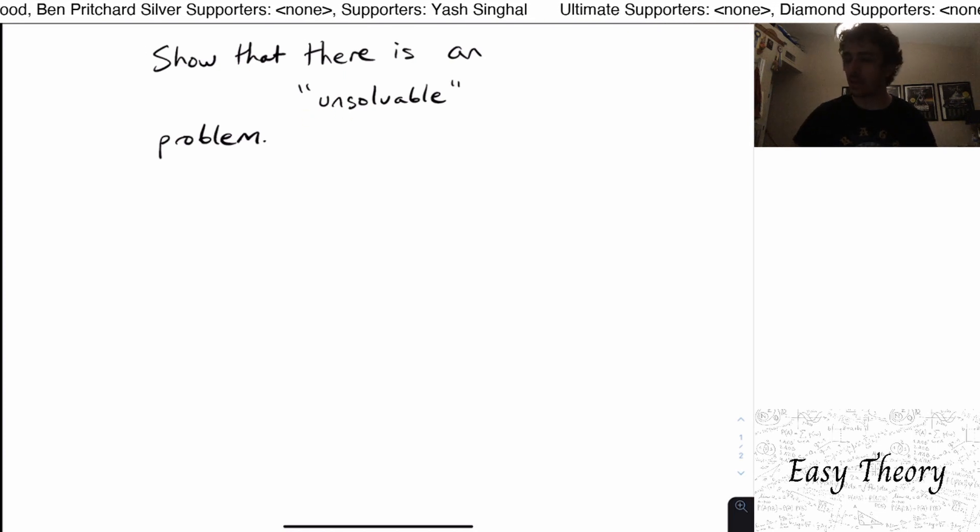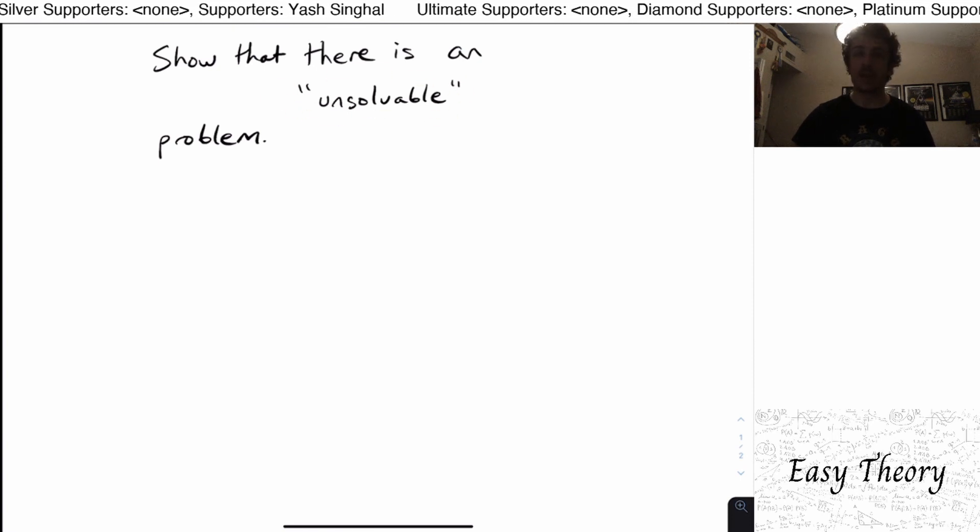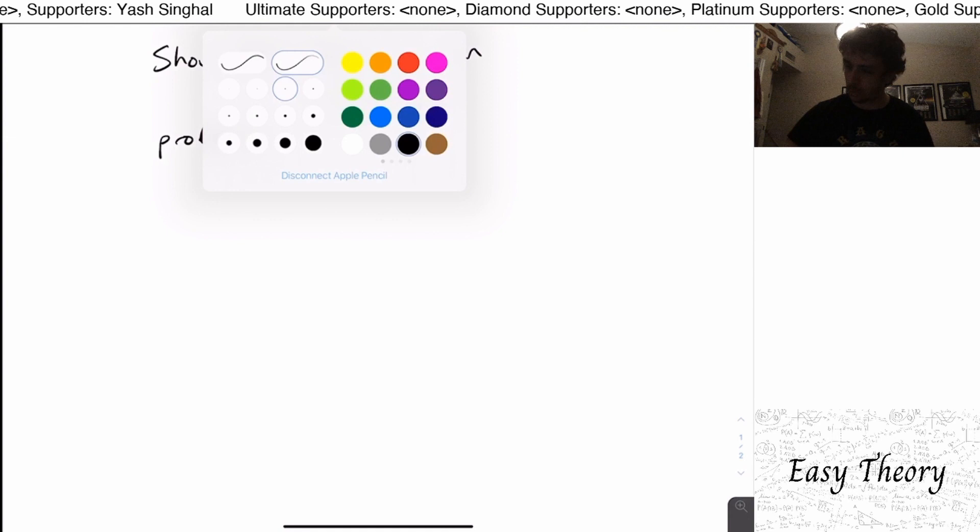So today we're going to be looking at showing that there's an unsolvable problem and in fact with this method you can even show that the vast majority of problems are unsolvable. So what does this mean?